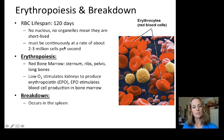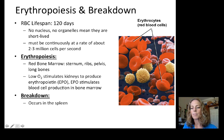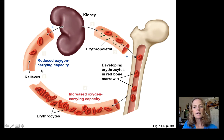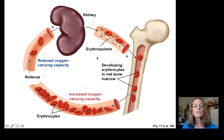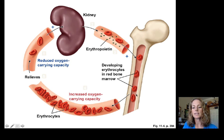EPO stimulates blood cell production in the bone marrow continuously at about two to three million cells per second. This follows a homeostatic pathway: low oxygen stimulates the kidneys to produce EPO, which stimulates the bone marrow to increase red blood cells, which are placed into the blood, increasing oxygen-carrying capacity and relieving the low-oxygen signal felt by the kidneys.